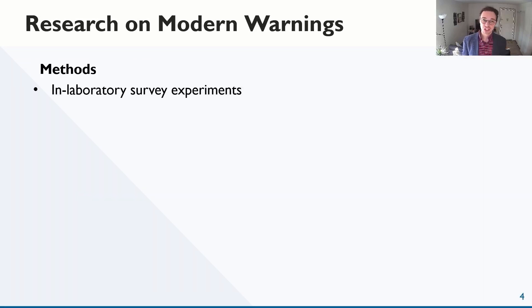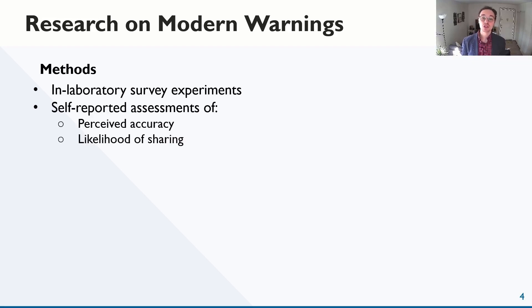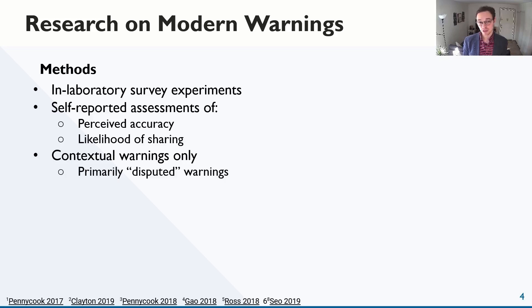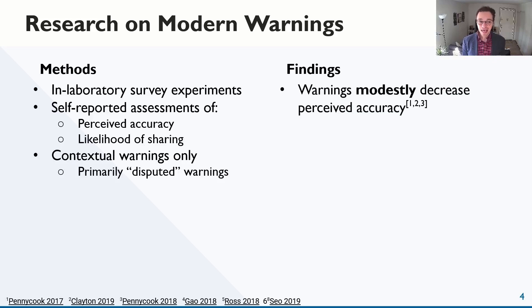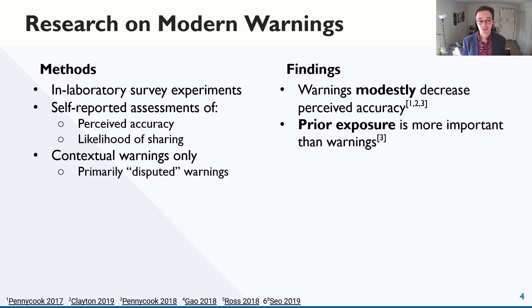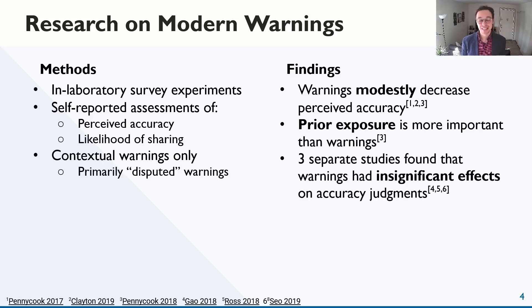These laboratory studies typically involve showing subjects some real news and some fake news, with warnings on some of the fake news. Researchers asked the subjects about accuracy and whether they would share the stories on social media. The studies have mostly looked at contextual warnings displayed inline next to the content, and primarily the Facebook-style disputed warnings. This work shows that the warnings have modest effects, and those effects are dominated by other factors like repeated exposure. A number of studies found null or insignificant effects.